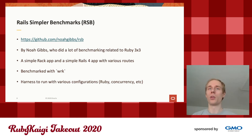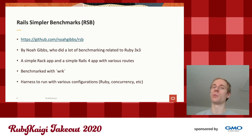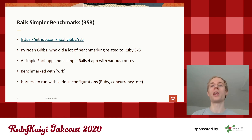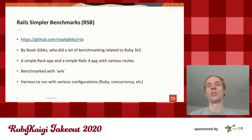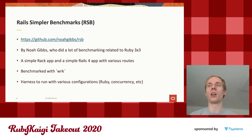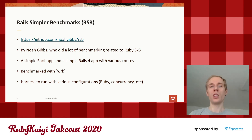Today I'll look at the Rails Simpler Benchmarks, or RSB, which is a project by Noah Gibbs, who did a lot of benchmarking on the Ruby 3×3 goal. Ruby 3×3 is the goal to make Ruby 3 times faster than Ruby 2.0. RSB consists of two things: a simple Rack application and a simple Rails 4 application, both with various routes. It uses WRK to benchmark all facets including latency. Rails 4 is used because Noah wants to compare back to Ruby 2.0, so you can't use the latest Rails.